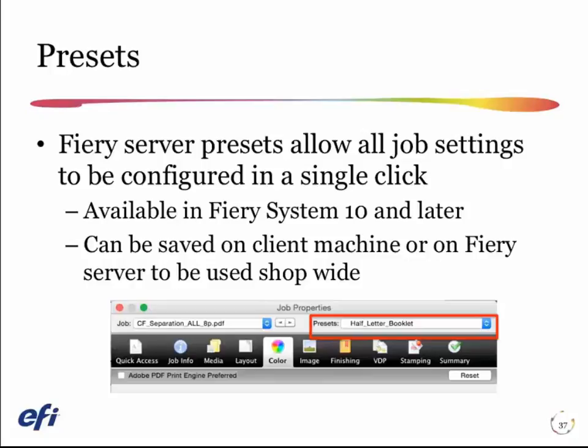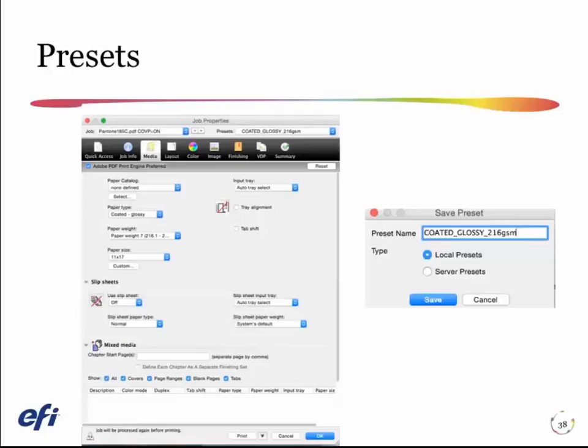or we can save it on the Fiery server so that all the network can see it. This preset contains many details, but the ones I'm interested in are that it will specify the paper type, the paper weight, the profile and calibration set linked to it, and the imaging settings such as the halftone screen and the resolution to print. Creating a preset is a simple matter of clicking save preset, putting in a name, and then telling it whether we want it local on this machine or on the server for the network to share.